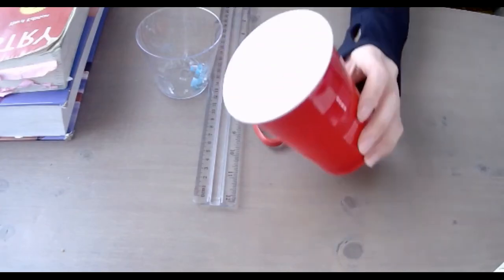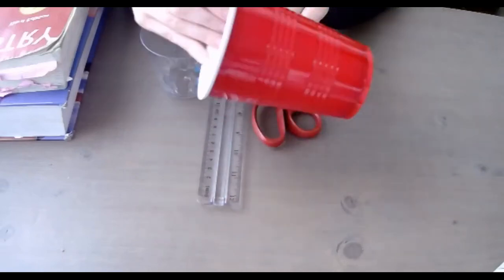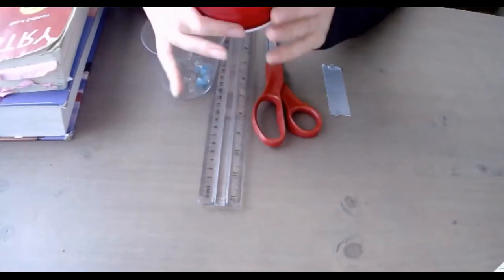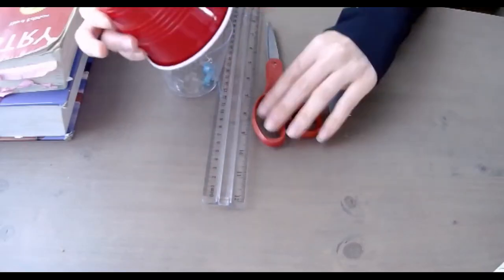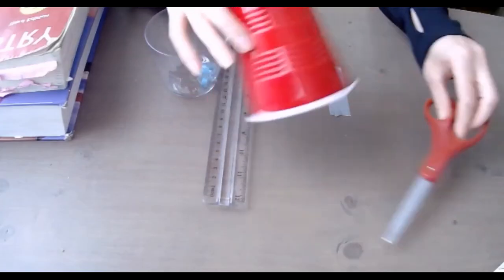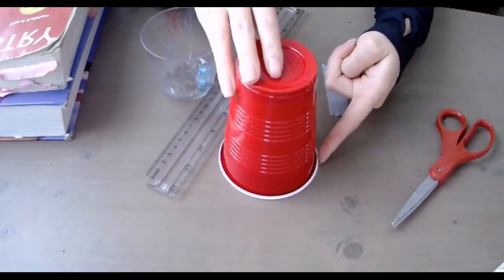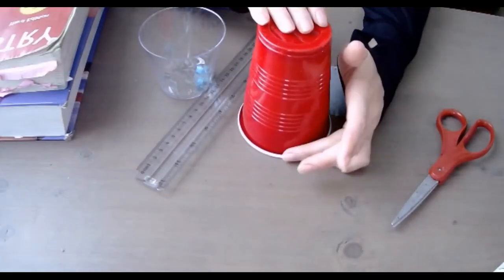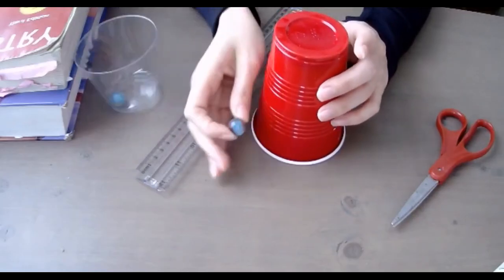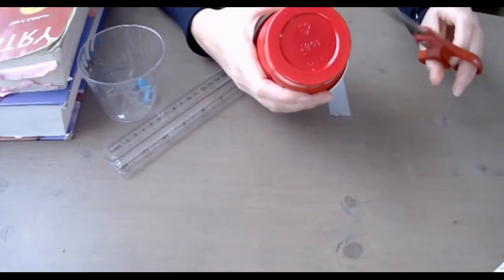You can use whatever cup you have available as long as it's plastic or foam, something you're able to cut that's relatively light. The first thing we want to do is make a hole in the bottom of the cup. We'll sit the cup with the open side down and make a hole large enough for the marble to roll into it. Let me show you what I mean.